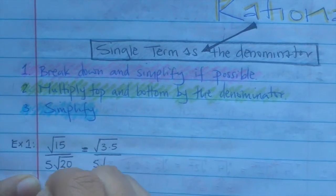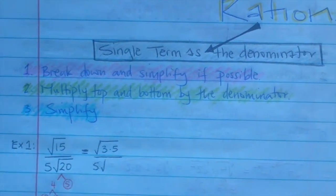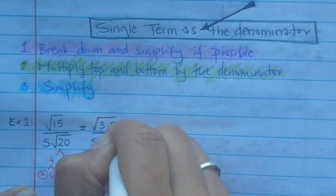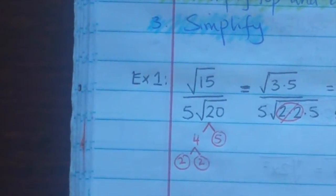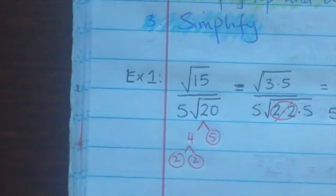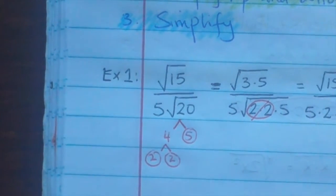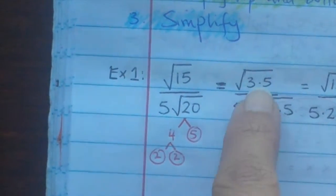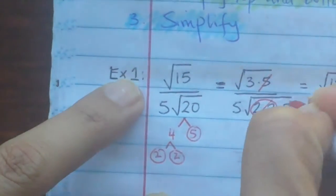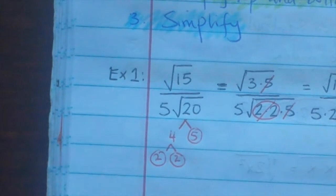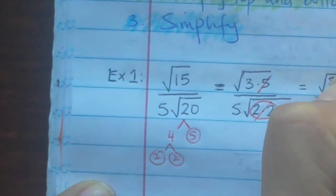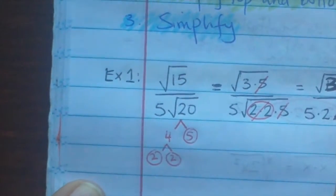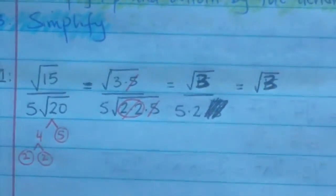And 4 is going to break down to 2 times 2. So rewrite it: 5 radical and then two 2's and a 5. We can take out a book of 2's outside. And remember, if it's on the top and on the bottom, you can also cancel it out — cancel out that 5 and that 5. So we have radical 3 on the top, and on the outside we have 2 times 5 which is 10.